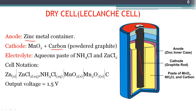The electrolyte is an aqueous paste of ammonium chloride and zinc chloride. Manganese dioxide is also mixed with this ammonium chloride, zinc chloride, and starch to prevent leakage. By adding starch, it is made into a paste that is less likely to leak. The graphite rod is completely surrounded with this paste of manganese dioxide, ammonium chloride, and zinc chloride mixed with starch.